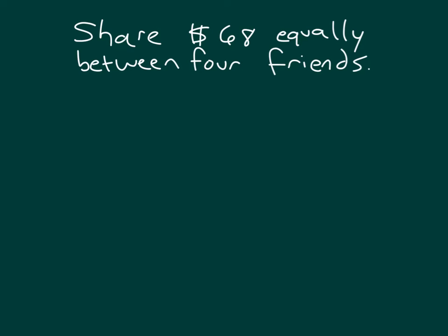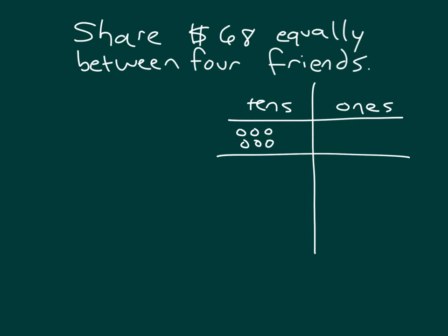Here, we're asked to share $68 equally between 4 friends. Let's draw our place value chart, where we have tens and ones. How many tens are within that number? Right, 6. So we draw 6 tens. And how many ones? Right, there are 8.